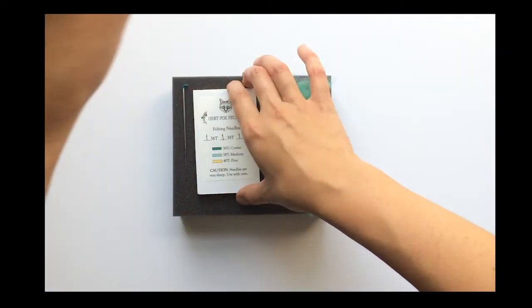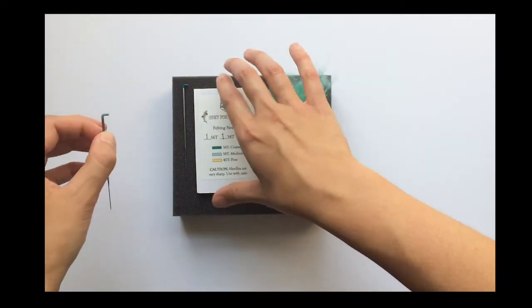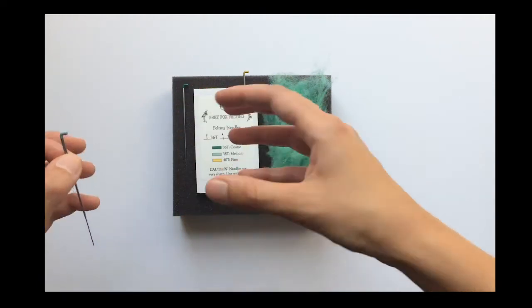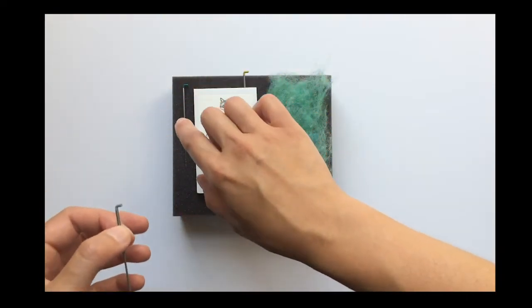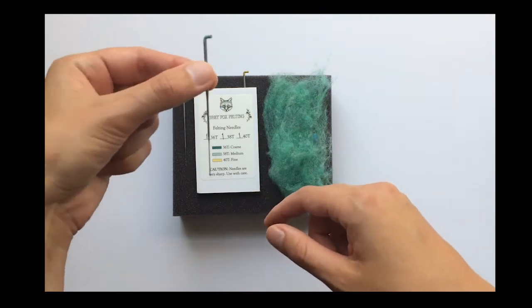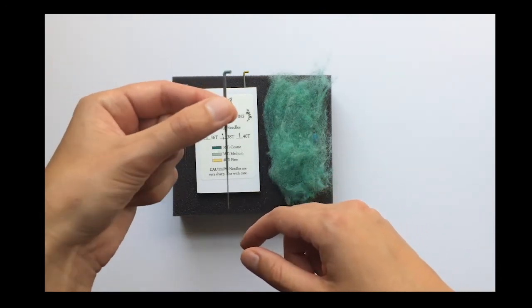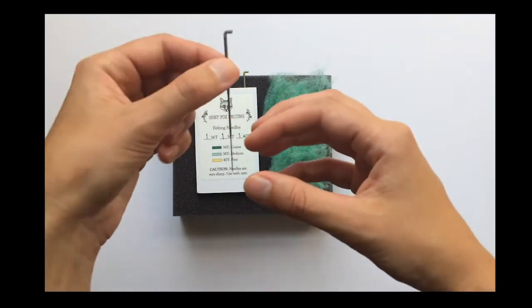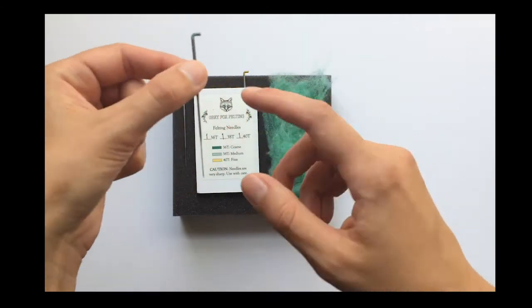But I use it for the bulk of the middle of my project. So after I've done the major shaping, getting the basic form I want with the number 36T, I'll move on to this 38 and do a lot of my project, the shaping, even some detailing, layering of colors with this one.